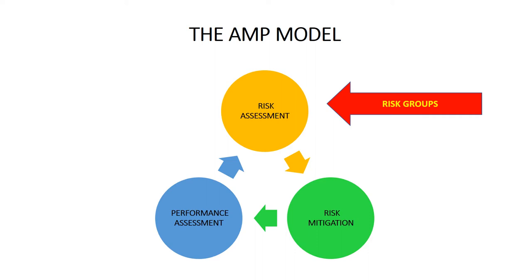We first assess the risk posed by a biological agent. We then mitigate the risk by the application of five controls, and we conduct a performance assessment based on our audits and observations of practices as well as accident and incident analysis. Risk groups are basically defined or characterized by the WHO, and we focus on risk groups during the process of risk assessment.